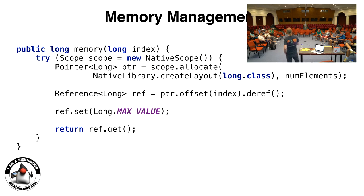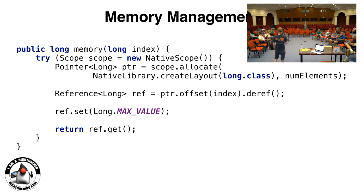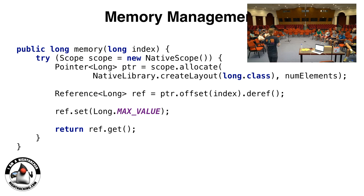Wait — you said it compiles down to no overhead, and now you said it has a double trampoline. Which one is it? The double trampoline actually gets inlined completely — you don't see it in the end. But you need it for the original call for the compiler to figure out what's actually going on. It is kind of weird technology. I guess you are referring to the method bootstrap — that's invoke dynamic mechanics.